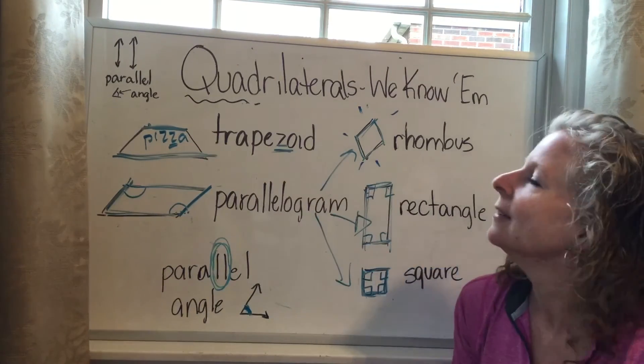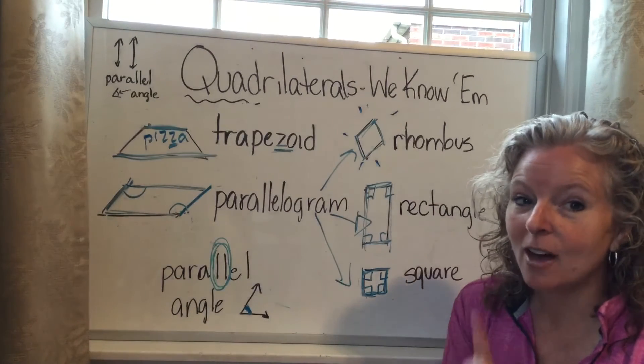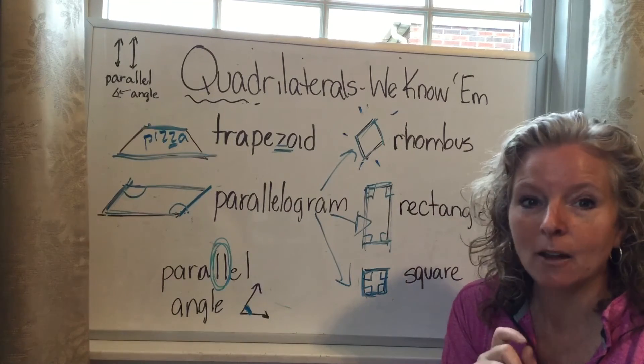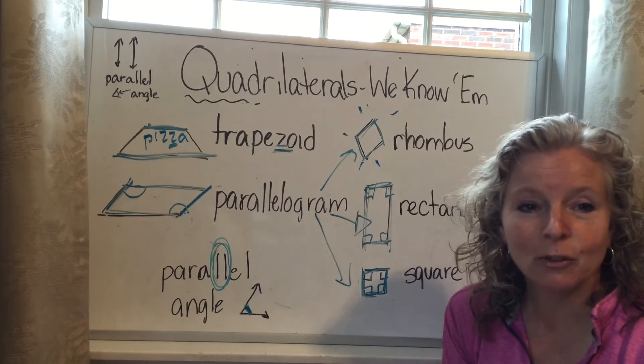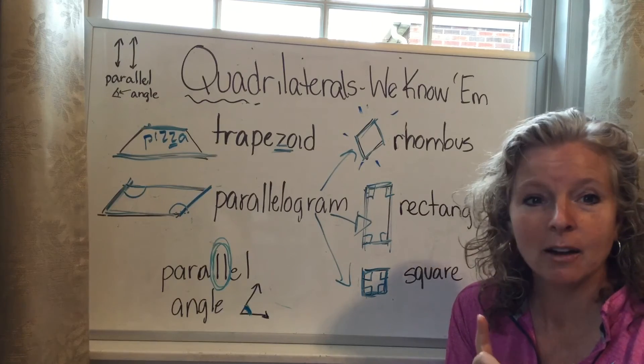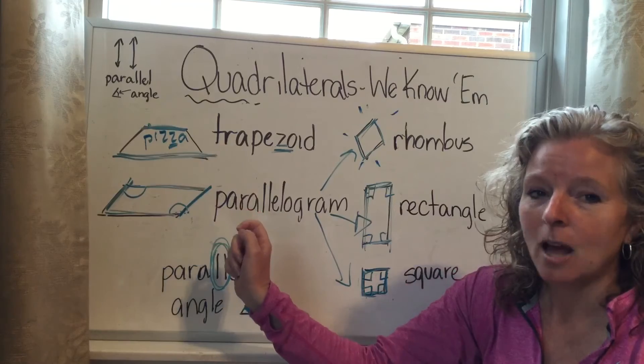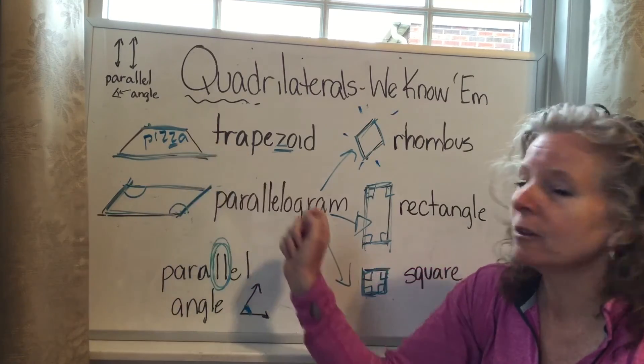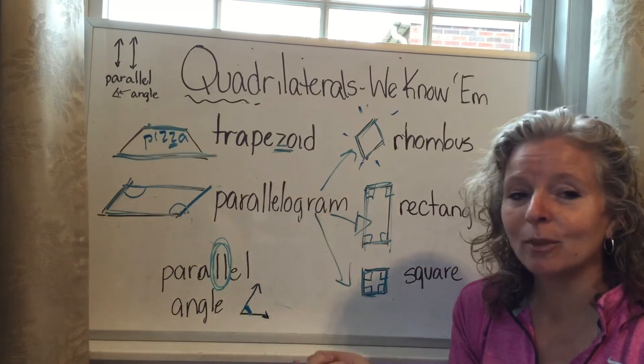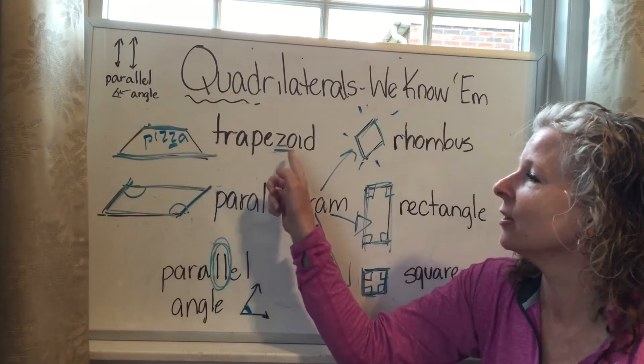You try it. Trapezoids have just one set of parallel... Trapezoids have just a parallel... One set of looks like the roof of... Remember, because they both have the letter Z.